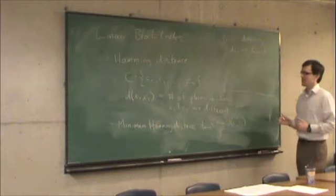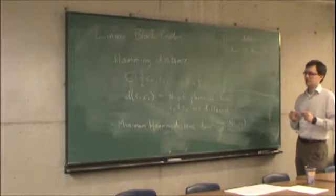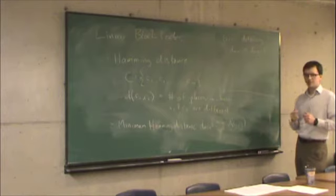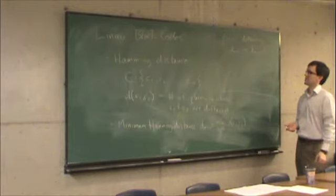For instance, if minimum Hamming distance is five, starting with a particular code word, you have to change at least five positions to get to another code word. So you're guaranteed to be able to detect up to four errors because there's no code word within Hamming distance four of any given code word.